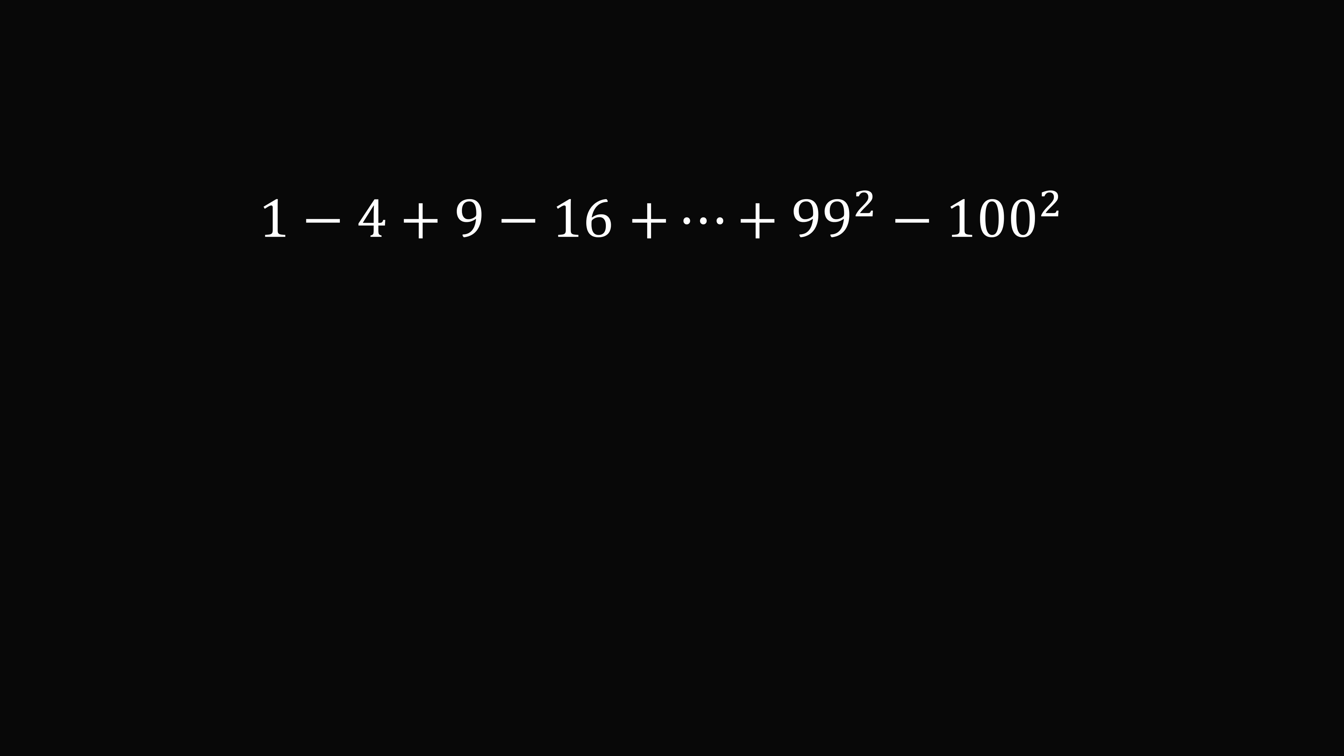To get started, let's expand the sum so that we can see the pattern a bit more clearly. Let's evaluate the sum of every pair of terms. We first have 1 minus 4, which is equal to negative 3. Then 9 minus 16 is equal to negative 7. Then 25 minus 36 is equal to negative 11, and so on.